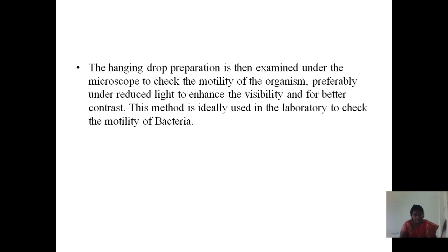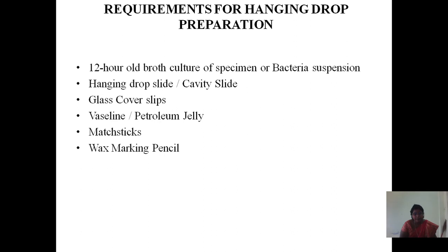This method is ideally used in the laboratory to check the motility of bacteria. Requirements for hanging drop preparation are: a 12-hour broth culture of specimen or bacterial suspension, a hanging drop slide or cavity slide, glass coverslips, vaseline or petroleum jelly, matchsticks, wax, and a marking pencil.